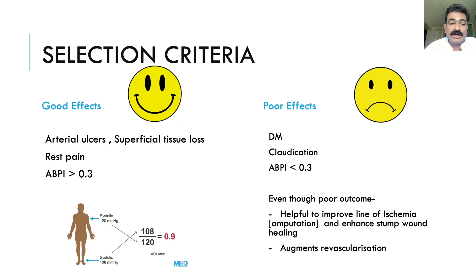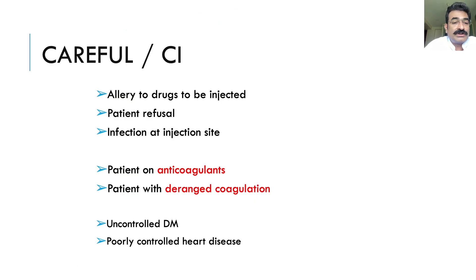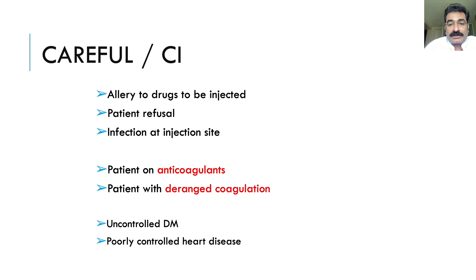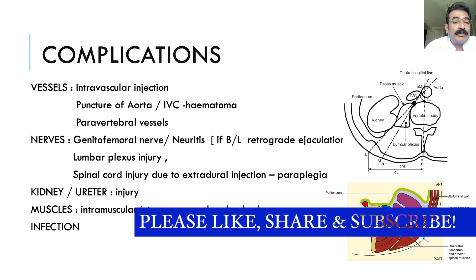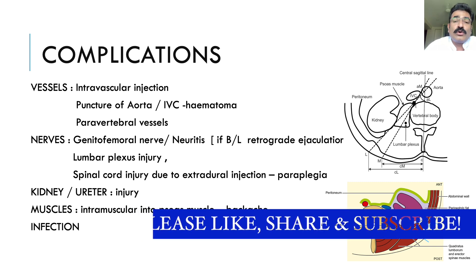Even in patients with poor outcomes, there is definite pain reduction, and the procedure is helpful in augmenting arterial revascularization surgery. Contraindications include allergy, patient refusal, infection at the injection site, and importantly, anticoagulation — the procedure should be deferred until INR/PT-INR is within normal limits. Comorbidities like diabetes mellitus and IHD should be optimized before the procedure.